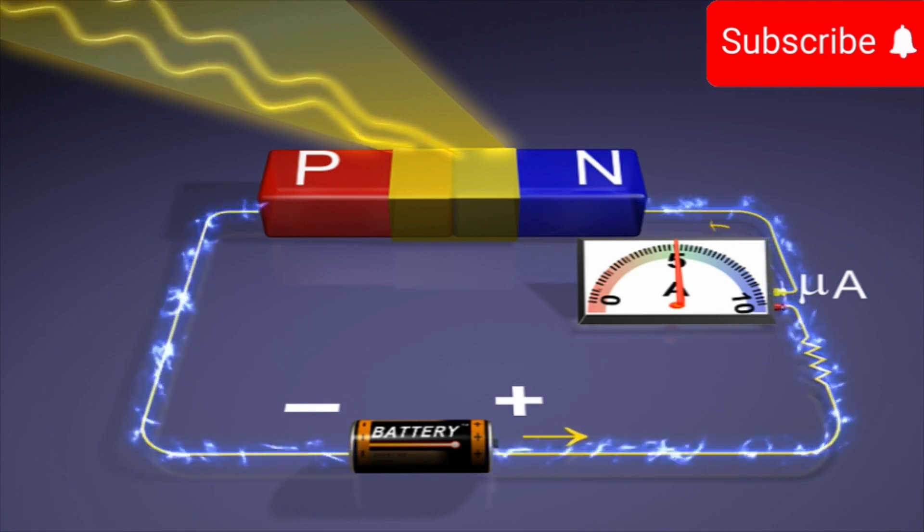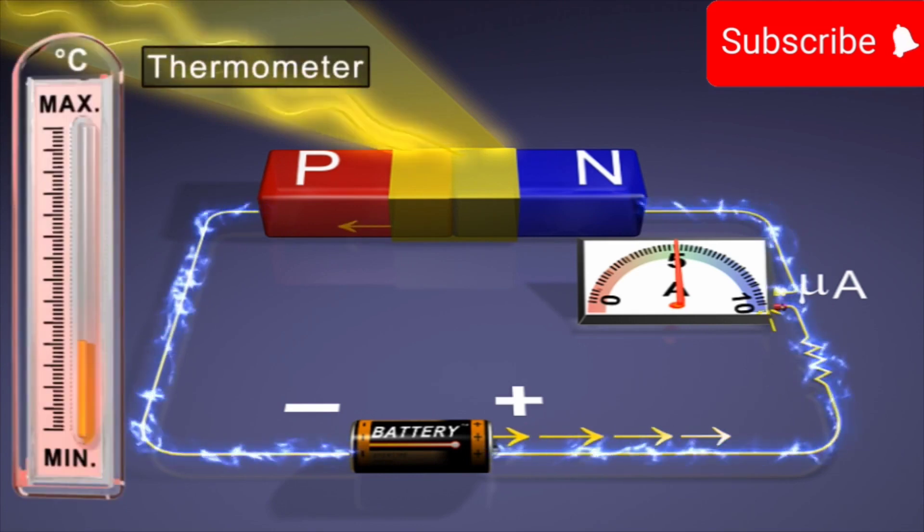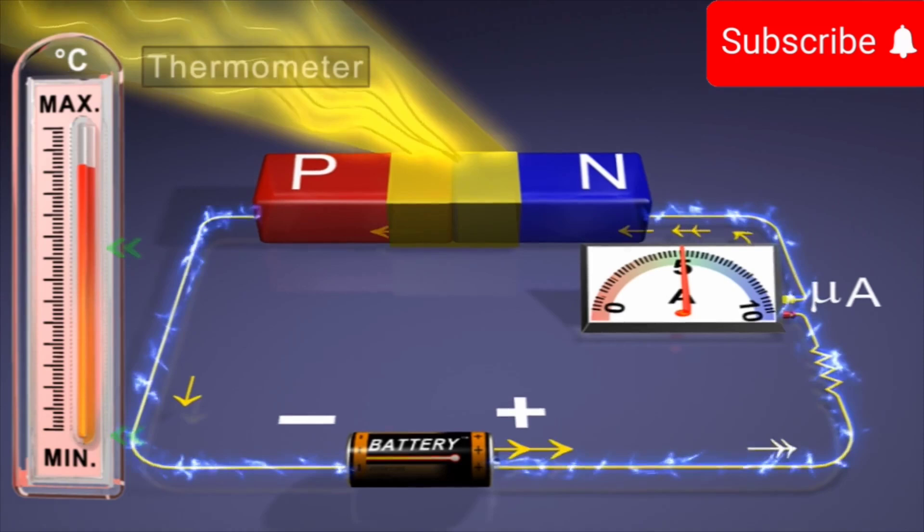The reverse saturation current can be increased either by increasing the temperature of the diode or by making more light incident over it.